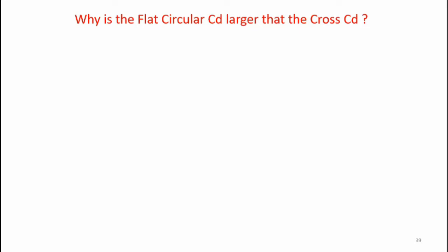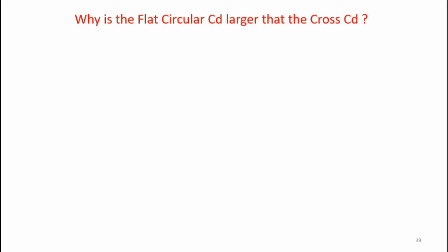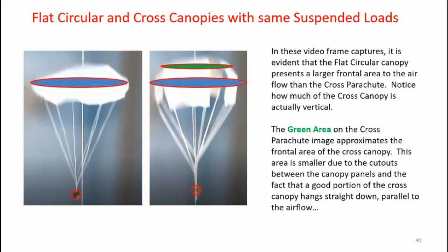Why is the flat circular parachute CD larger than the cross parachute CD? The drag coefficient is actually dependent on how much frontal area is presented to the airflow — the larger the frontal area, the larger the drag. This frontal area is not the same thing as the reference area used in calculating the drag coefficient. Comparing the flat circular parachute to the cross parachute under identical loading conditions, the blue oval representing the frontal area of the flat circular is larger than the green oval representing the frontal area of the cross parachute. This means less drag is produced by the cross parachute, and thus a smaller CD is calculated. Also, the panels on the cross parachute are more vertical and are not really contributing to the drag.